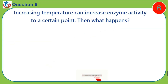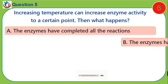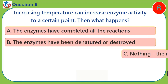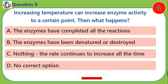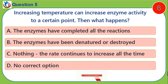Question five: Increasing temperature can increase enzyme activity to a certain point — then what happens? A) the enzymes have completed all the reactions, B) the enzymes have been denatured or destroyed, C) nothing, the rate continues to increase all the time, D) no correct option.